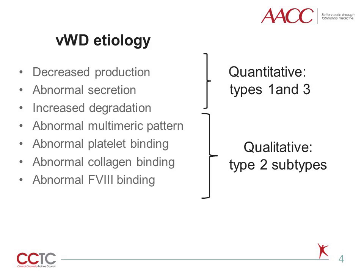Type III von Willebrand disease is a severe bleeding disorder characterized by absence of von Willebrand factor. The type II subtypes of von Willebrand disease are caused by functional abnormalities of von Willebrand factor due to an abnormal multimeric pattern, which can be due to problems with multimerization at the time of synthesis, or increased clearance of larger multimers, abnormal platelet binding, abnormal collagen binding, or abnormal factor VIII binding. In type II subtypes, the dysfunctional von Willebrand factor is also often present in reduced amounts. The mutations that cause type II forms are typically restricted to specific regions of the gene.